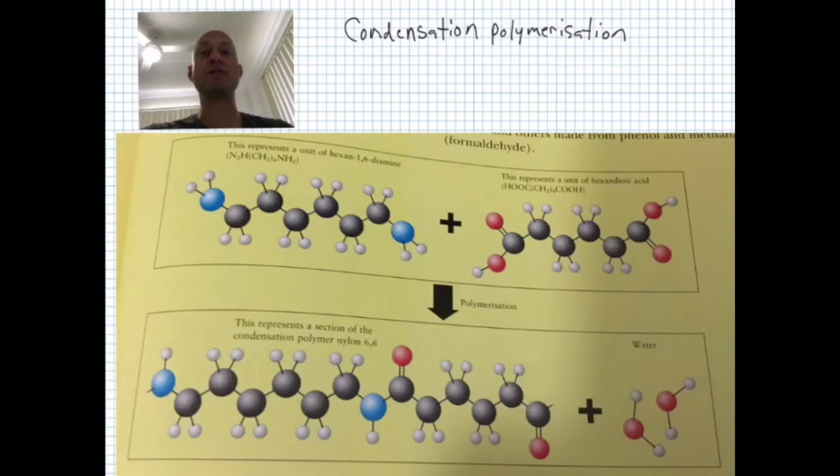The alternative to addition polymerization is called condensation polymerization. This is more like a chemical reaction between reactants, and the chemical formula of the polymer is not the same as the chemical formula of the molecules from which it was formed.